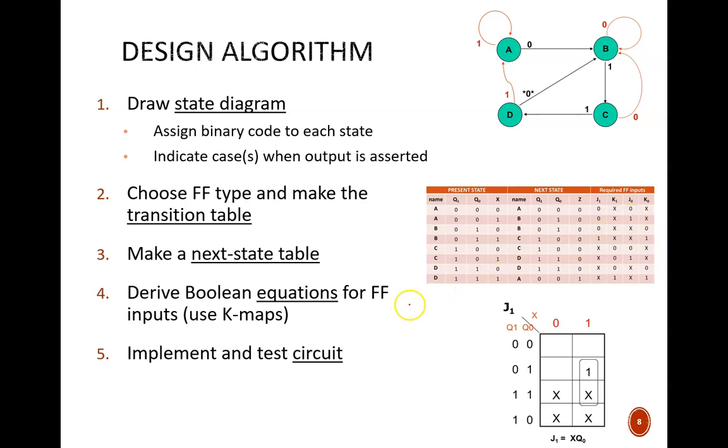The fourth step is to use that next state table to derive Boolean equations for flip-flop inputs. With our relatively small circuits, this will be done with Karnaugh maps. Finally, step five is to apply those equations and build a circuit, either physically or in a simulator. Of course, that build should then be tested.